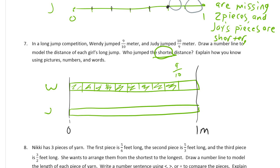Judy's is in ninths, and fortunately it's not going to matter too much. We can do three sets of three for nine, so there's thirds, and then we can make each third into thirds, and then we'll have ninths. Judy has ten ninths. This is one ninth, this is two ninths, three, four, five, six, seven, eight — the whole meter is nine ninths. So she's going to need another ninth.